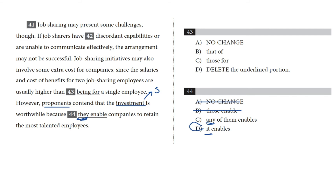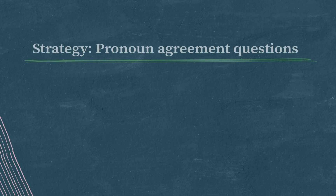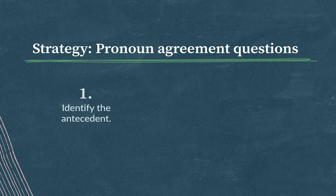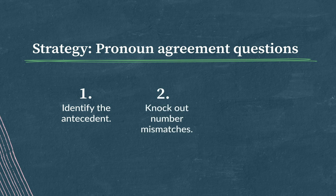Choice D does that simply and elegantly. On the SAT writing and language test, simpler and more direct, concise language is almost always the better choice. Let's review our strategy for questions like these. Once you've identified a pronoun agreement question: one, hunt for the antecedent — is it singular or plural? Two, knock out any number mismatches. And three, check the context — what pronoun works best for this situation?